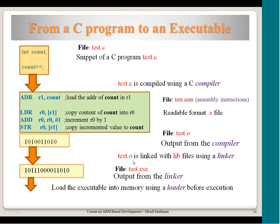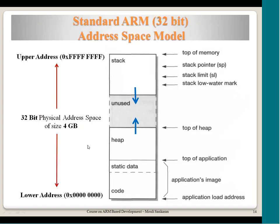Let us see how the C program finally gets converted to an executable and runs on target hardware. This is the typical memory space of an ARM processor — memory outside the processor that the CPU accesses through address and data buses. This memory is split into multiple spaces: code, data, heap, and stack. The code portion holds the executable, the initialized data sits in the data portion, and we will see where stack and heap reside for a running program.